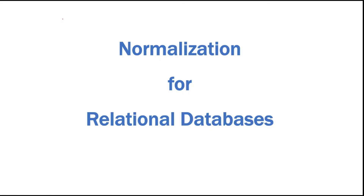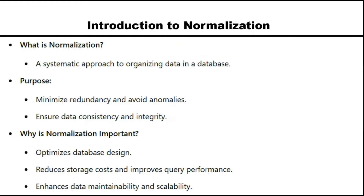Good morning students. In this session we will start the normalization process for relational databases. Earlier we have seen functional dependencies, the closure set of attributes, and most importantly how to compute the candidate keys from the closure set of attributes and functional dependencies. These three concepts are very handy and powerful in the normalization process, which is why we covered them in detail.